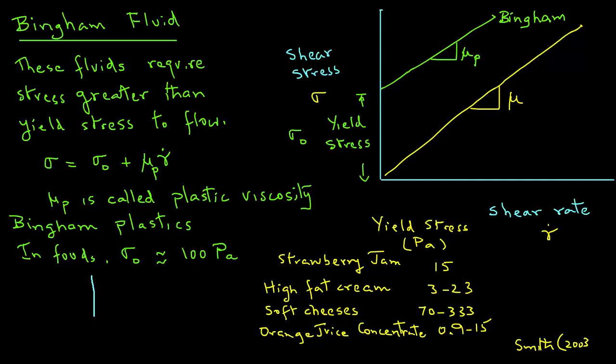If we plot the apparent viscosity - you will need to look at another tutorial on apparent viscosity - versus shear rate gamma dot, we will get a profile like this for a Bingham plastic.